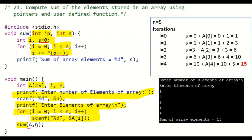In the first iteration, for i equal to zero, the value of s is equal to zero plus a of zero. s starts at zero, and a of zero is the value of star p plus plus — only after the execution of this statement does the p value get increased. So in the next iteration, a of zero changes to a of one, and this process continues — for each iteration the index of a increases as we are using the increment operation.